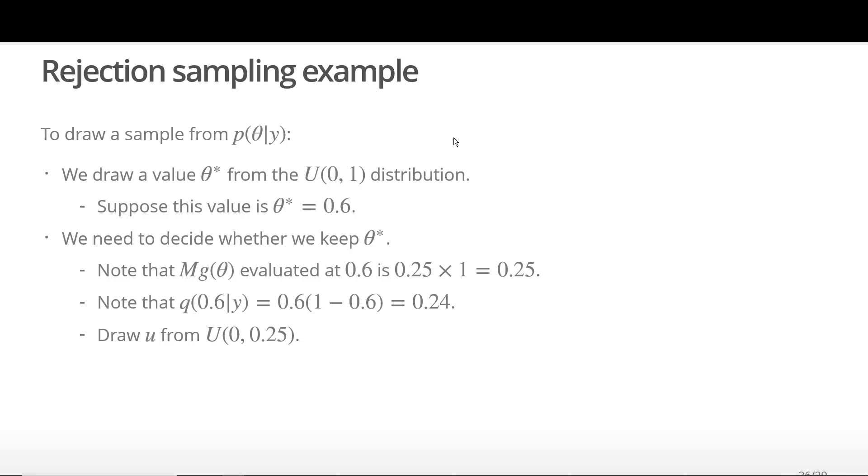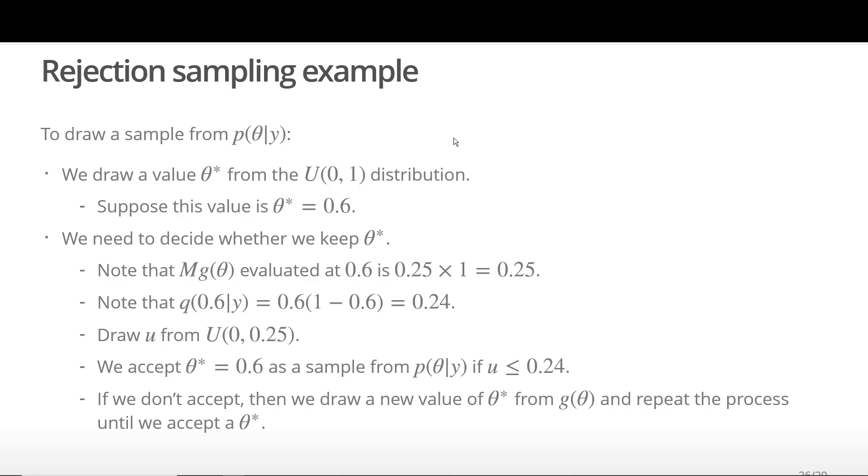To make our decision, we draw U from a uniform(0, 0.25) distribution, where the 0.25 comes from the bounding function evaluated at theta star equal to 0.6. If the value of U we draw is less than 0.24, which is the value of the unnormalized target density evaluated at 0.6, then we accept the value of theta star. If we don't accept, then we start the process again by drawing a new value of theta star from our proposal distribution.